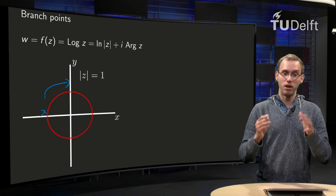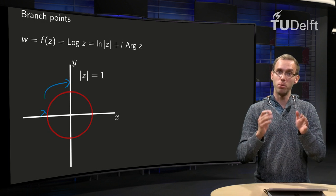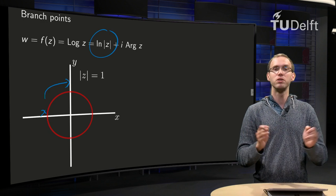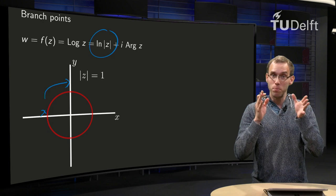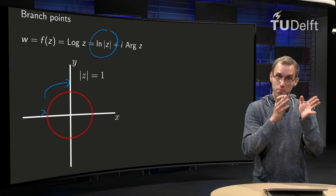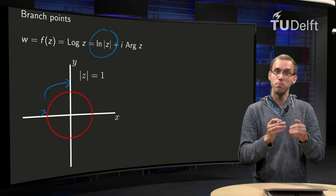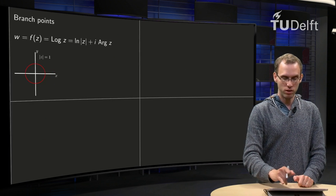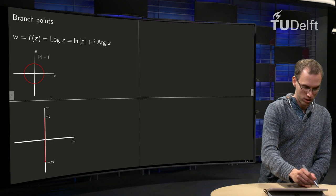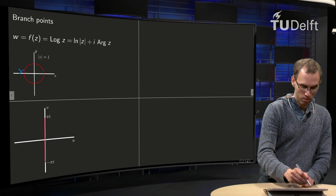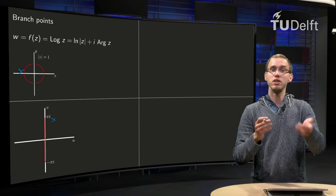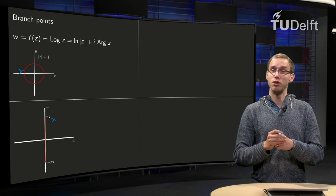This part is easy, because we are on the unit circle, so the norm of z equals 1. So this term over here, the ln of z will always drop out, so our log of z will be purely imaginary. And we start with the principal value of pi, so we start at the point pi i. So that's what we see over here in the codomain, and then we see what happens if we change z in the domain.